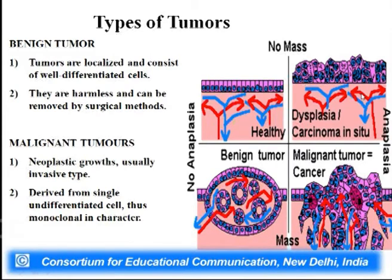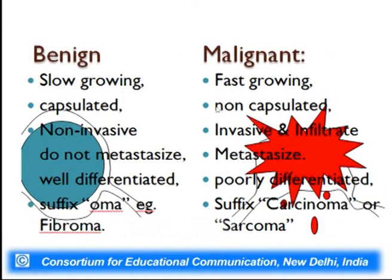For your notes: benign tumors are always slow growing; malignant tumors are always fast growing. Benign are capsulated; malignant are non-capsulated. Benign are non-invasive; malignant are invasive and infiltrate — they have the ability to break away from the original site and metastasize. Benign tumors remain encapsulated and do not proliferate away from the primary site. A benign tumor always carries the suffix '-oma' such as fibroma, while malignant tumors are called carcinomas.